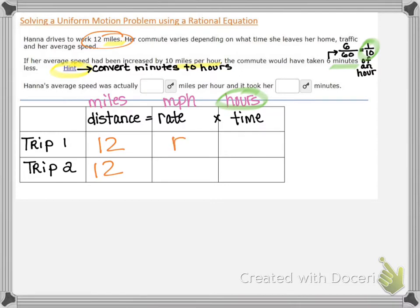Originally her rate is just R. If possible, she could increase her rate 10 miles per hour. So that new rate would be R plus 10.